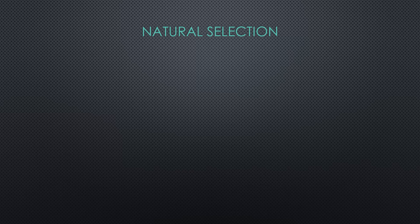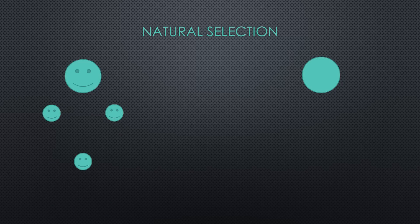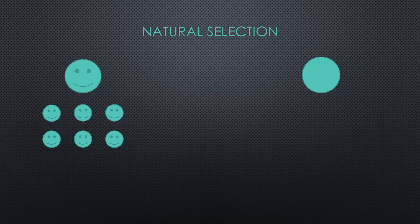Let's use a simple example to show how this works. Let's say that a smiley face is more fit than a circle. Because of this, the smiley produces six more smileys and circles produce none. Now if we say smileys are genotype big A big A and circles are genotype little a little a, we can see why future generations would have more big A than little a alleles and more big A big A than little a little a genotypes.